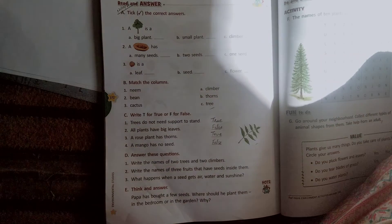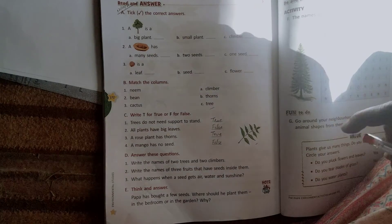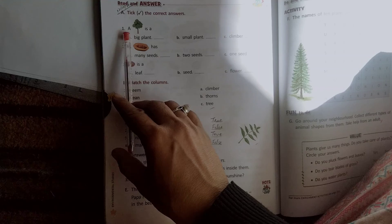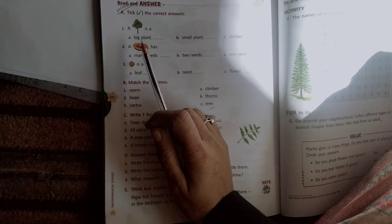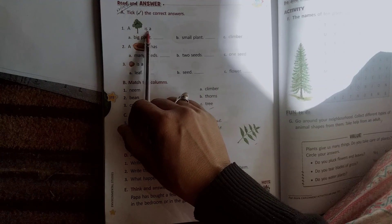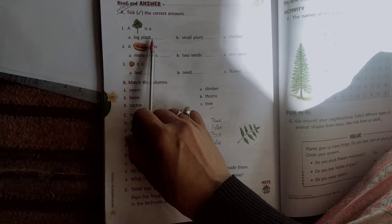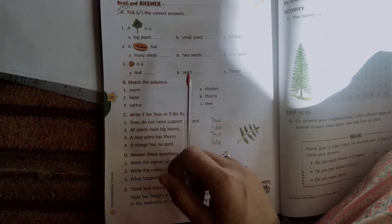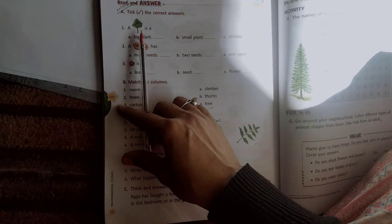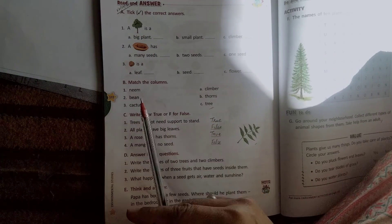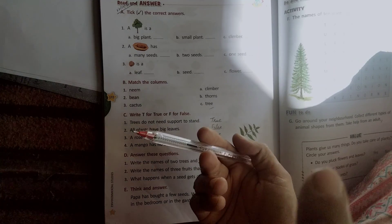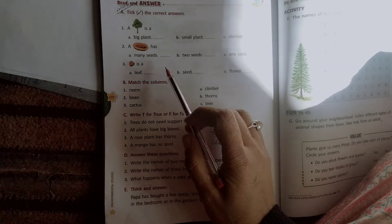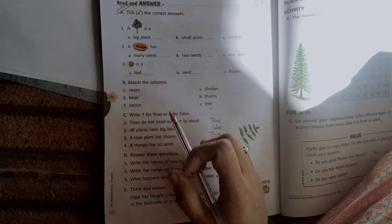First is, so dear students, see A. First is a tree. What is the picture? It is a tree, right? So a tree is a big plant, small plant, or climber. So now let us know what the tree is. It is a small plant, climber, or big plant? So a tree is a big plant. So big plant, we have to take a tick.